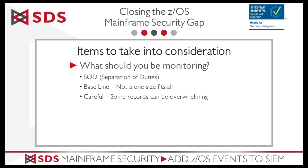This is information and events that we've learned from our customers — what they thought was really important to monitor from an SMF-80 point of view. Be careful: some of those records can be pretty overwhelming. One you need to look out for is the SMF-92s — there's a lot of information there. So if you do want to enable some of those SMF-92 records, only enable a subtype of them.